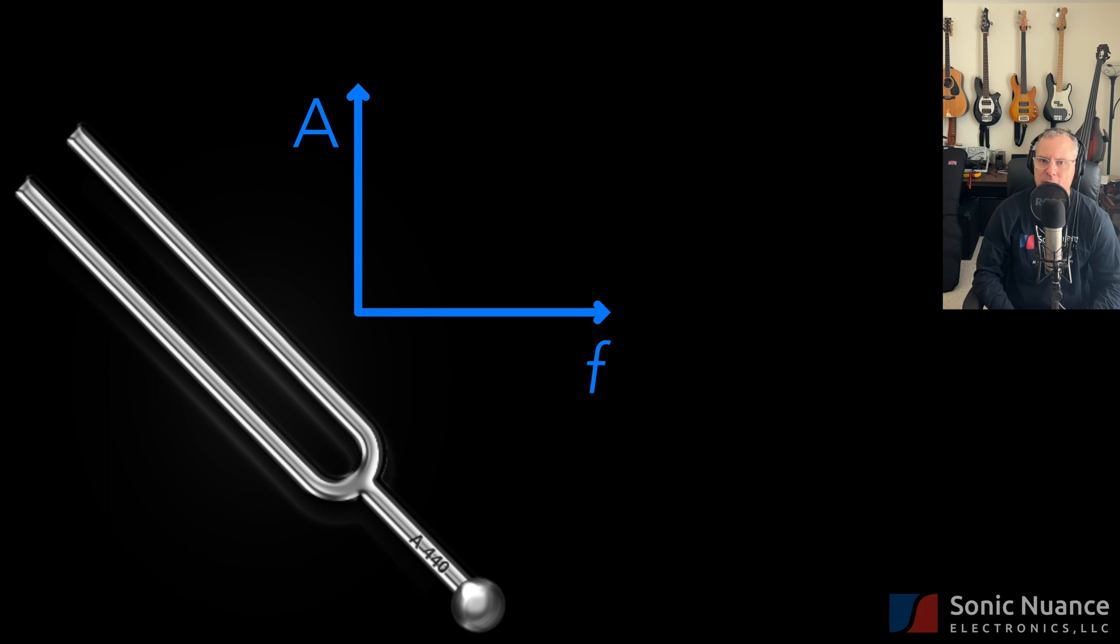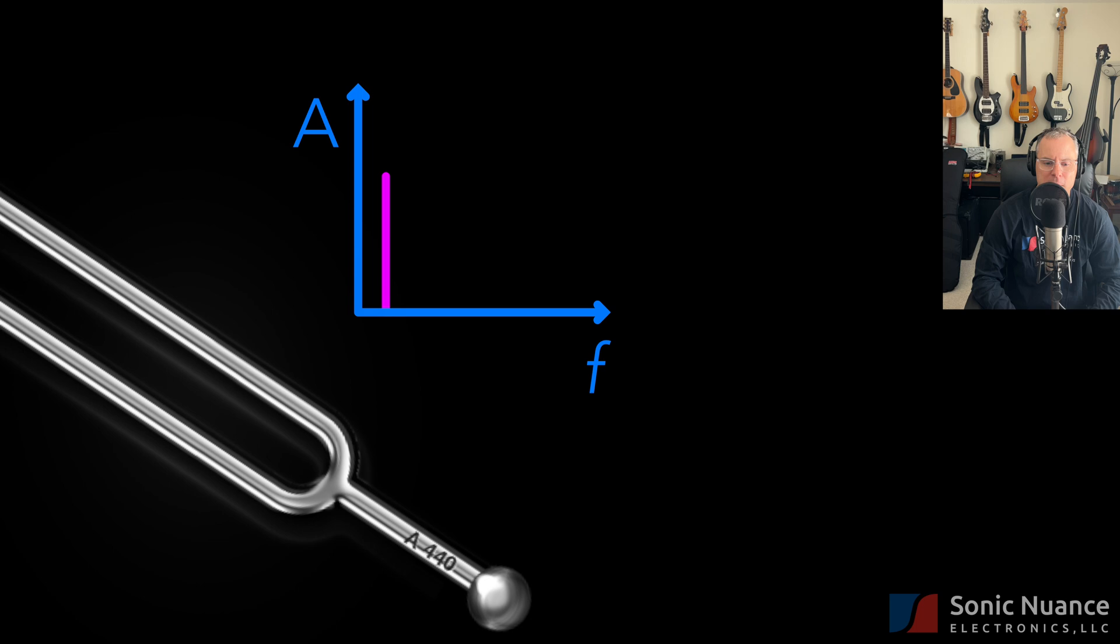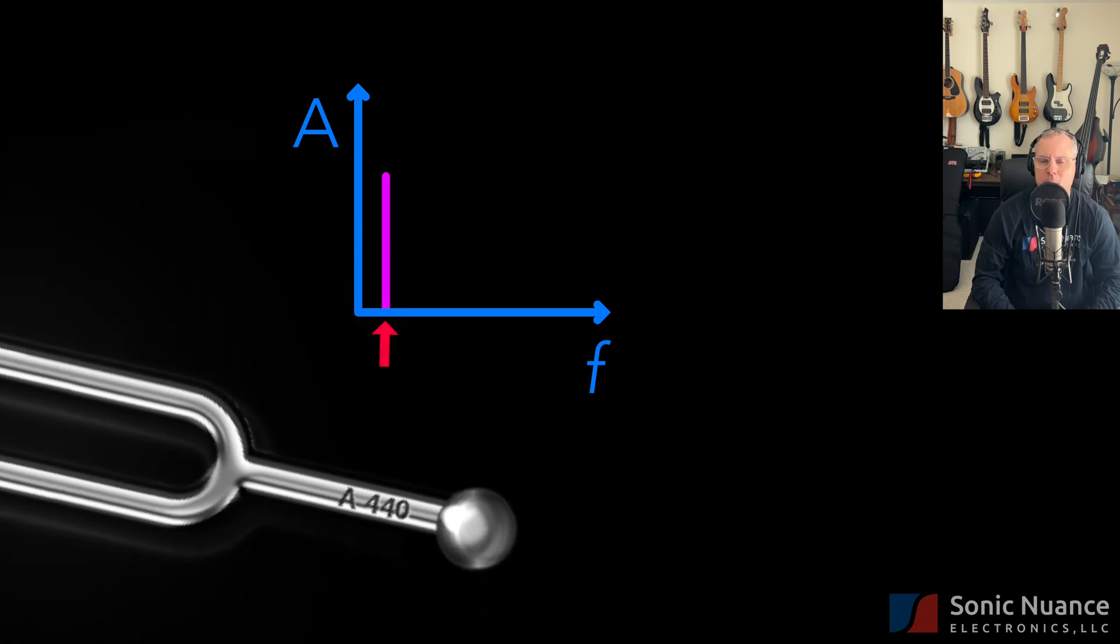It is 440 hertz, also known as A440. It's used on tuning forks the world over and used for tuning guitars, basses, various orchestra instruments. Here's what it looks like on our plot, and what it sounds like.